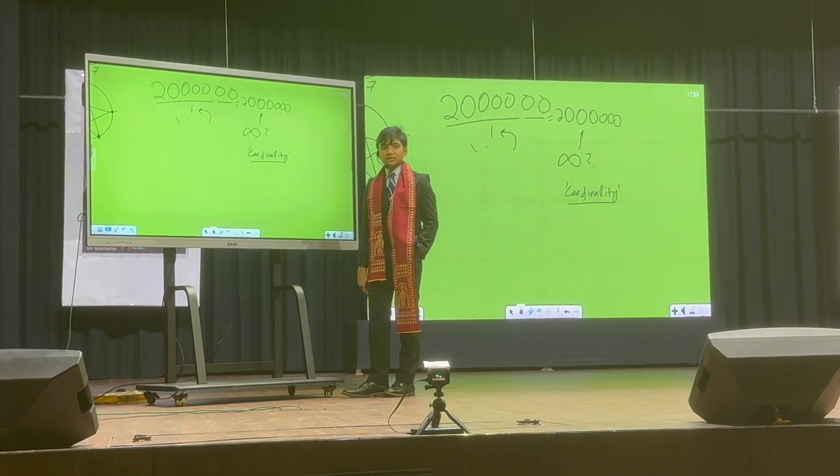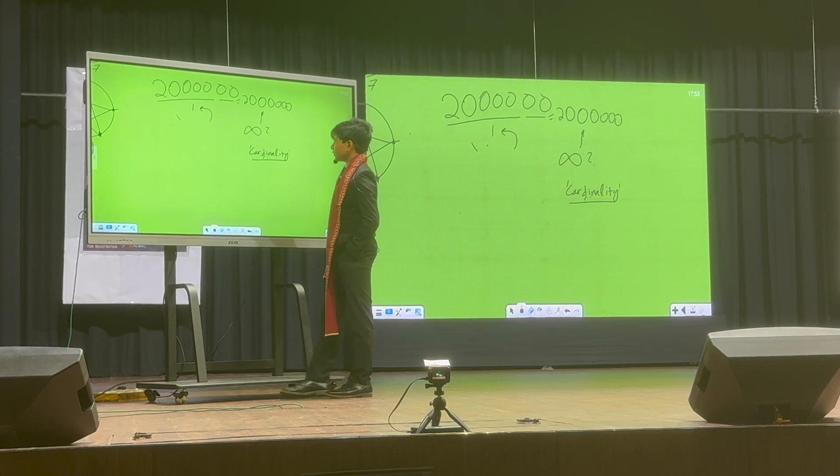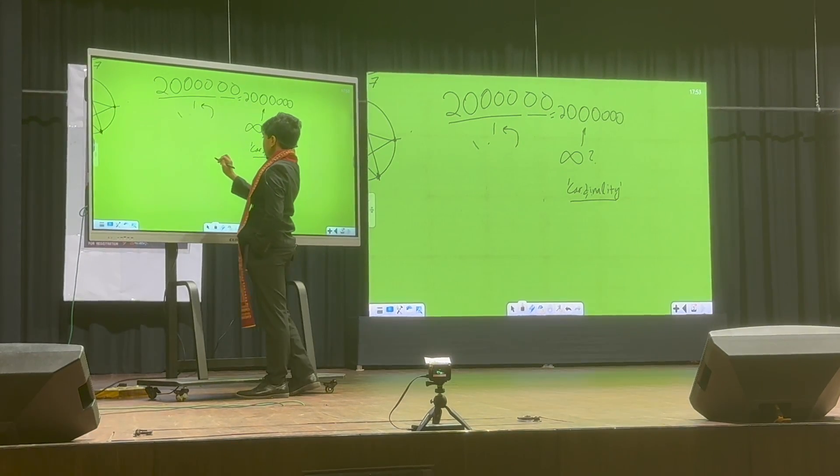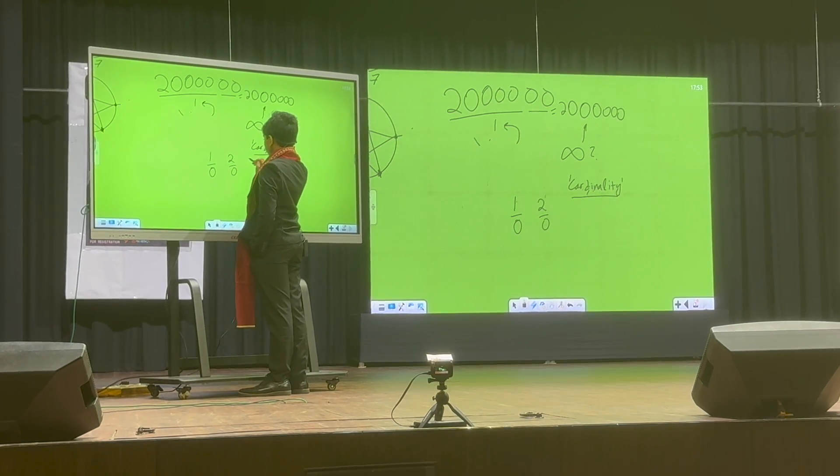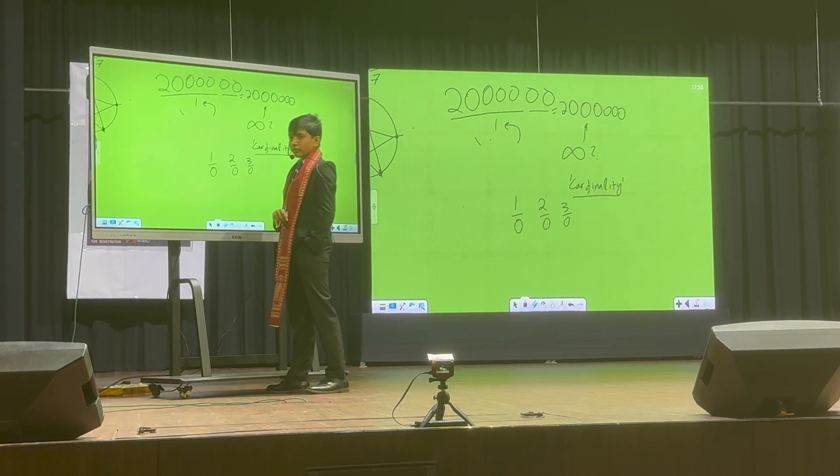So basically, it's just the study of the real size of infinity. So if this is infinity, what is one over zero? What is two over zero? What is three over zero? Are they different from one another? Should one be bigger than the other?